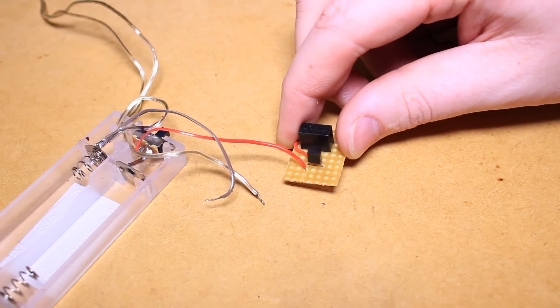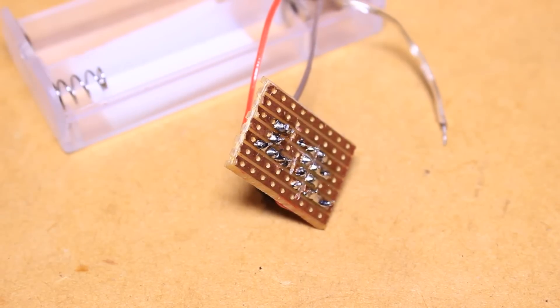Then solder another piece of hook up wire from the VCC pin on the ESP module to the collector pin of the transistor.